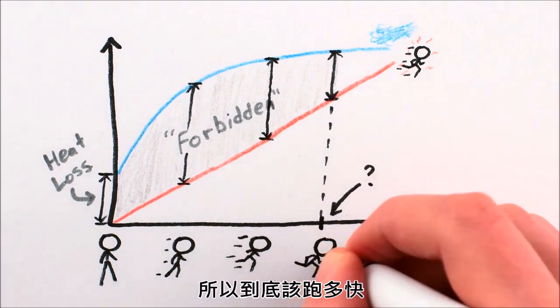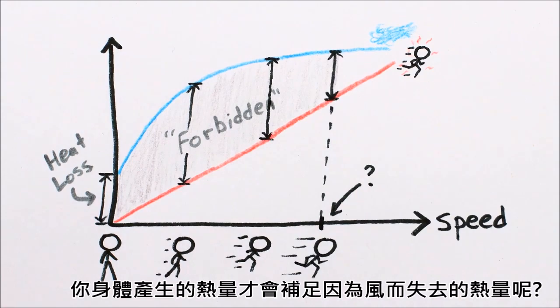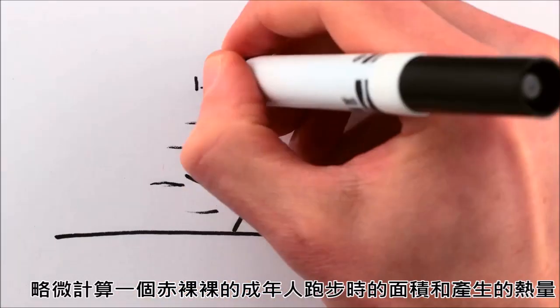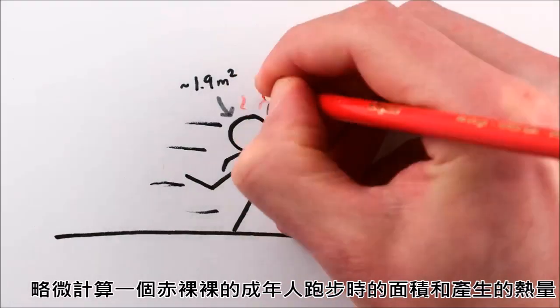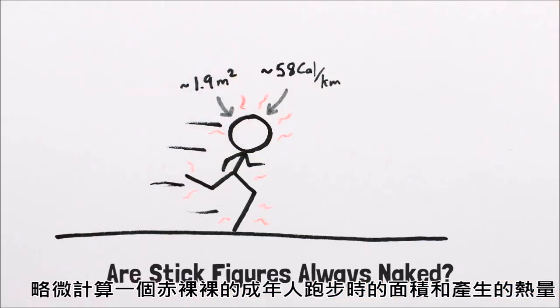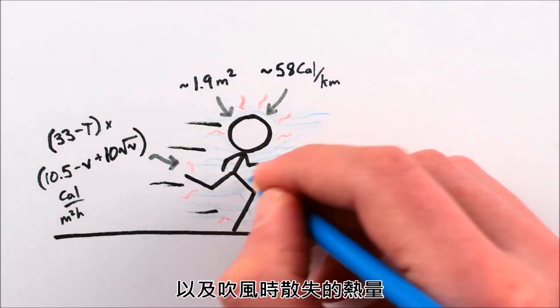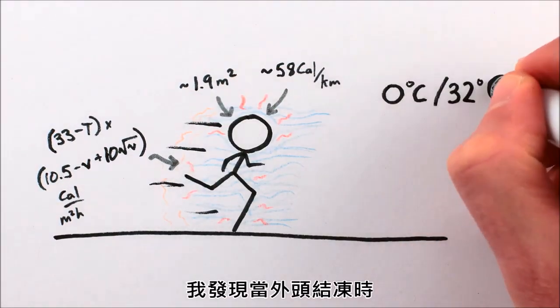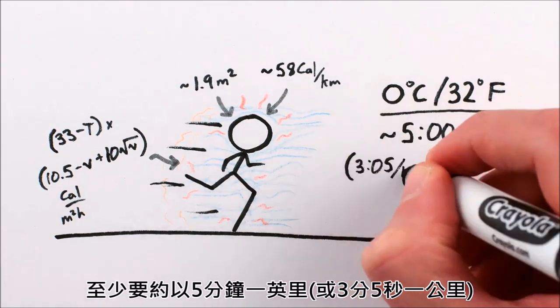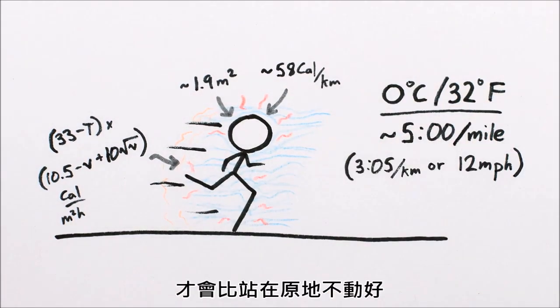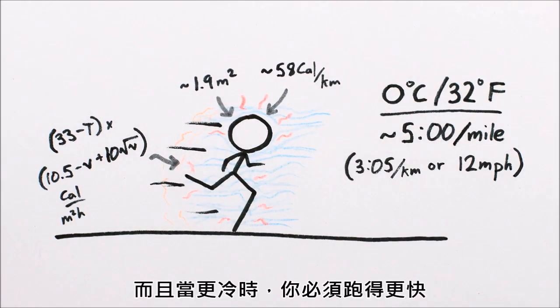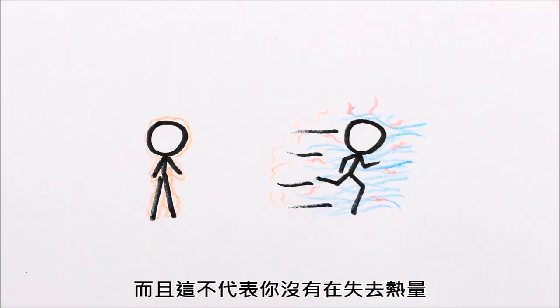So what's the minimum speed where the heat you generate running finally balances out the additional heat you lose due to air movement? Well, using some estimations for the surface area and energy generation of an adult human running naked, and the effects of wind on heat loss, I found that when it's freezing outside, you need to be able to run roughly a five-minute mile to be better off moving than staying put. Faster if it's colder out.